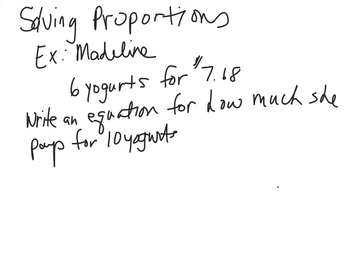We're on to example three, solving proportions and using cross products. Madeline is buying six containers of yogurt, and it's going to cost $7.68. Write an equation, and then solve it for how much she pays for 10 yogurts.